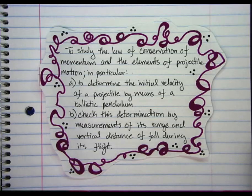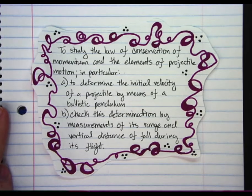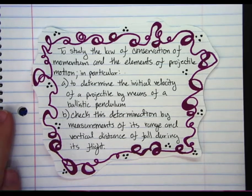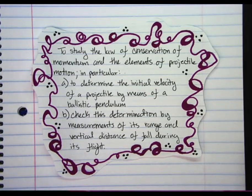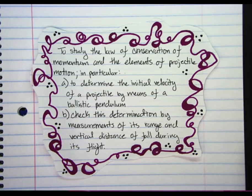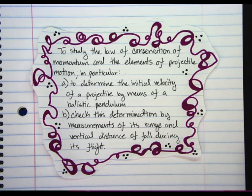Speed of projectile. The main objective of this lab is to study the law of conservation of momentum and the elements of projectile motion — in particular, to determine the initial velocity of a projectile by means of a ballistic pendulum, and to check this determination by measurements of its range and vertical distance of fall during its flight.